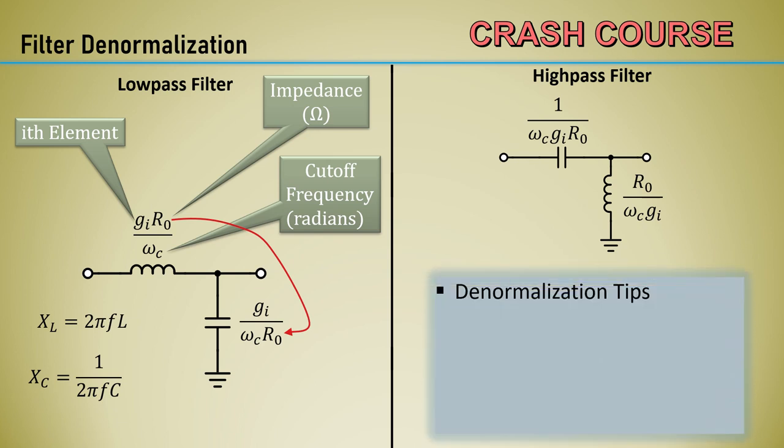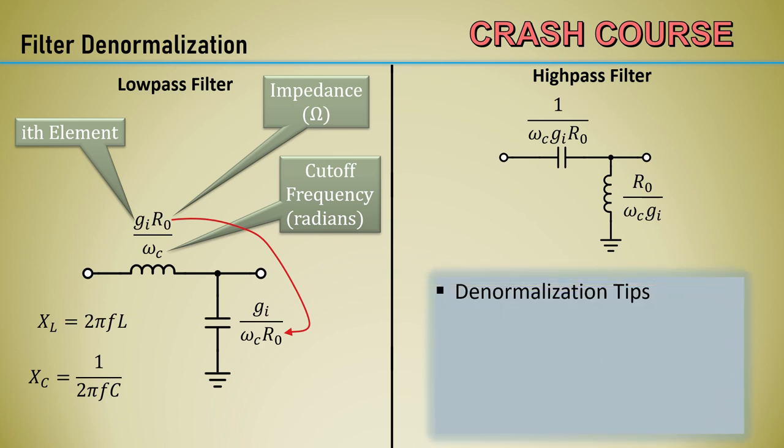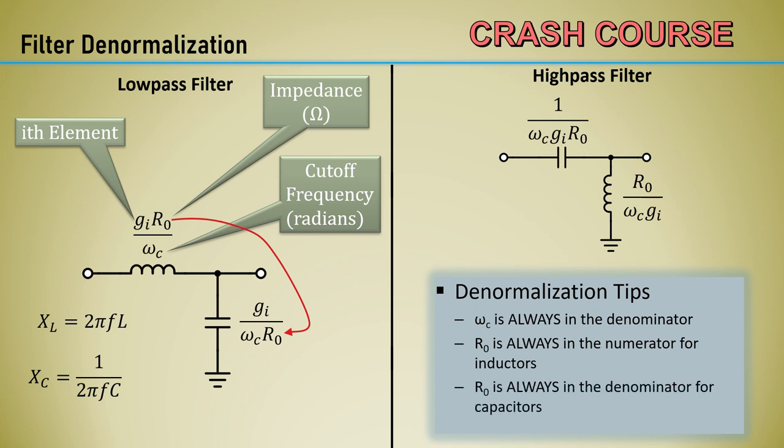Here are some denormalization tips that can serve as mnemonics. Omega-C is always in the denominator. R0 is always in the numerator for inductors, and R0 is always in the denominator for capacitors.